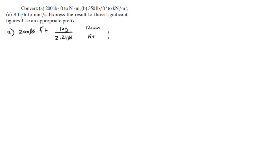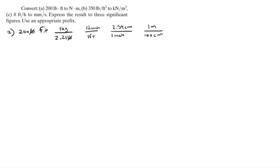We know that in one foot there are 12 inches, in one inch there are 2.54 centimeters, and in 100 centimeters there is one meter. So we get rid of the feet, the inches, and the centimeters, leaving us with kilograms times meters.